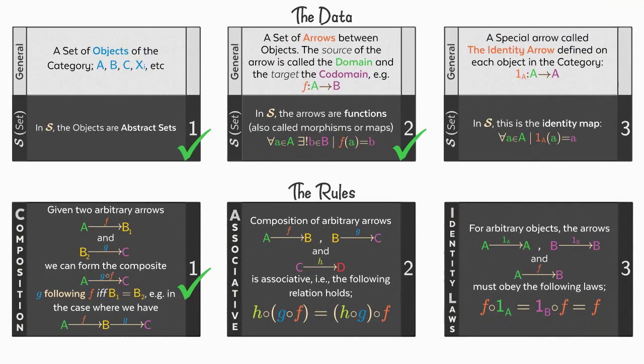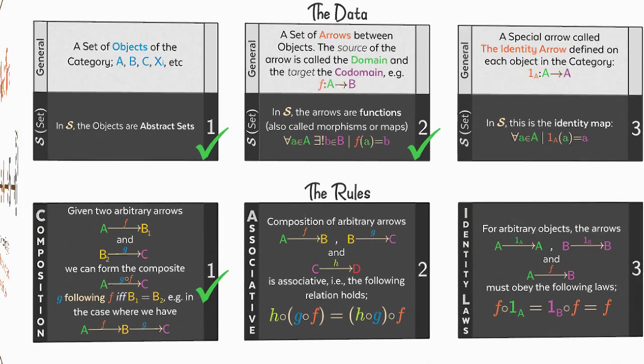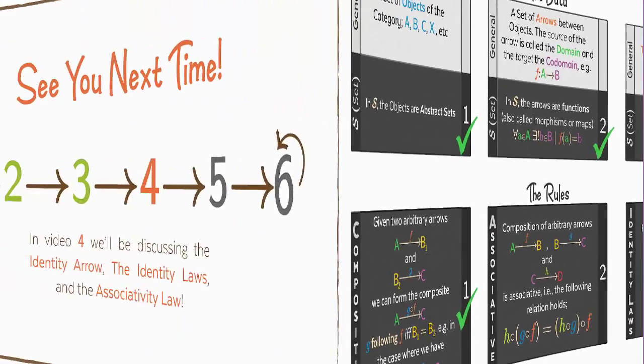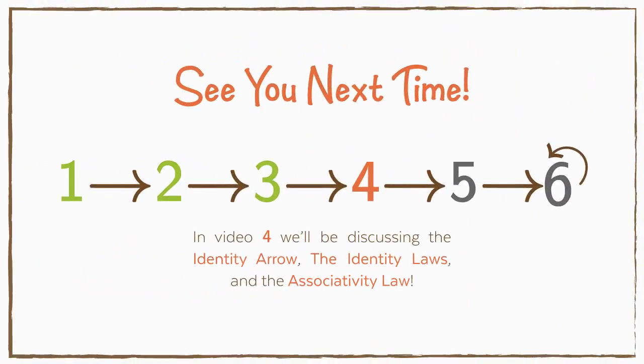So we've discussed the objects, arrows, and composition. In the next video we'll discuss the last three: the identity arrow, the identity laws, and the associative laws.